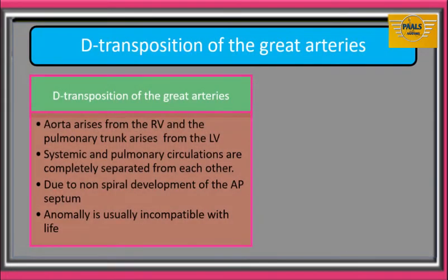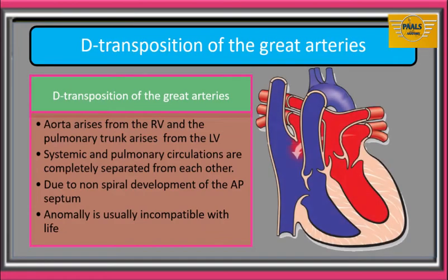D-transposition of the great arteries is a condition in which the aorta arises abnormally from the right ventricle and the pulmonary trunk arises abnormally from the left ventricle. Systemic and pulmonary circulations are completely separated from each other due to non-spiral development of the aorticopulmonary septum. This anomaly is usually incompatible with life.